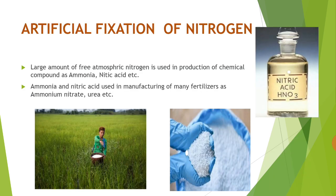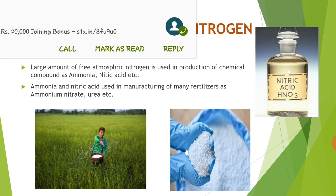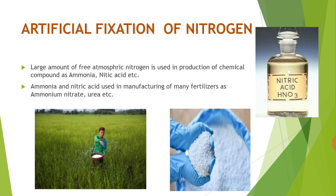Now let's move to the artificial fixation of nitrogen. When we use the word 'artificial', it means it is not occurring naturally — it is undertaken by human beings. Under artificial fixation of nitrogen, the large amount of nitrogen present in the atmosphere is used in the production of chemical compounds such as ammonia and nitric acid. These are used in the manufacturing of many fertilizers.